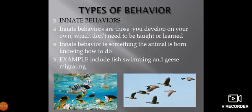Now we will discuss the types of behavior. There are two types: innate behavior and learned behavior. Innate behavior, also called hereditary behavior, refers to behaviors you develop on your own which don't need to be taught or learned. Innate behavior is something the animal is born knowing how to do.